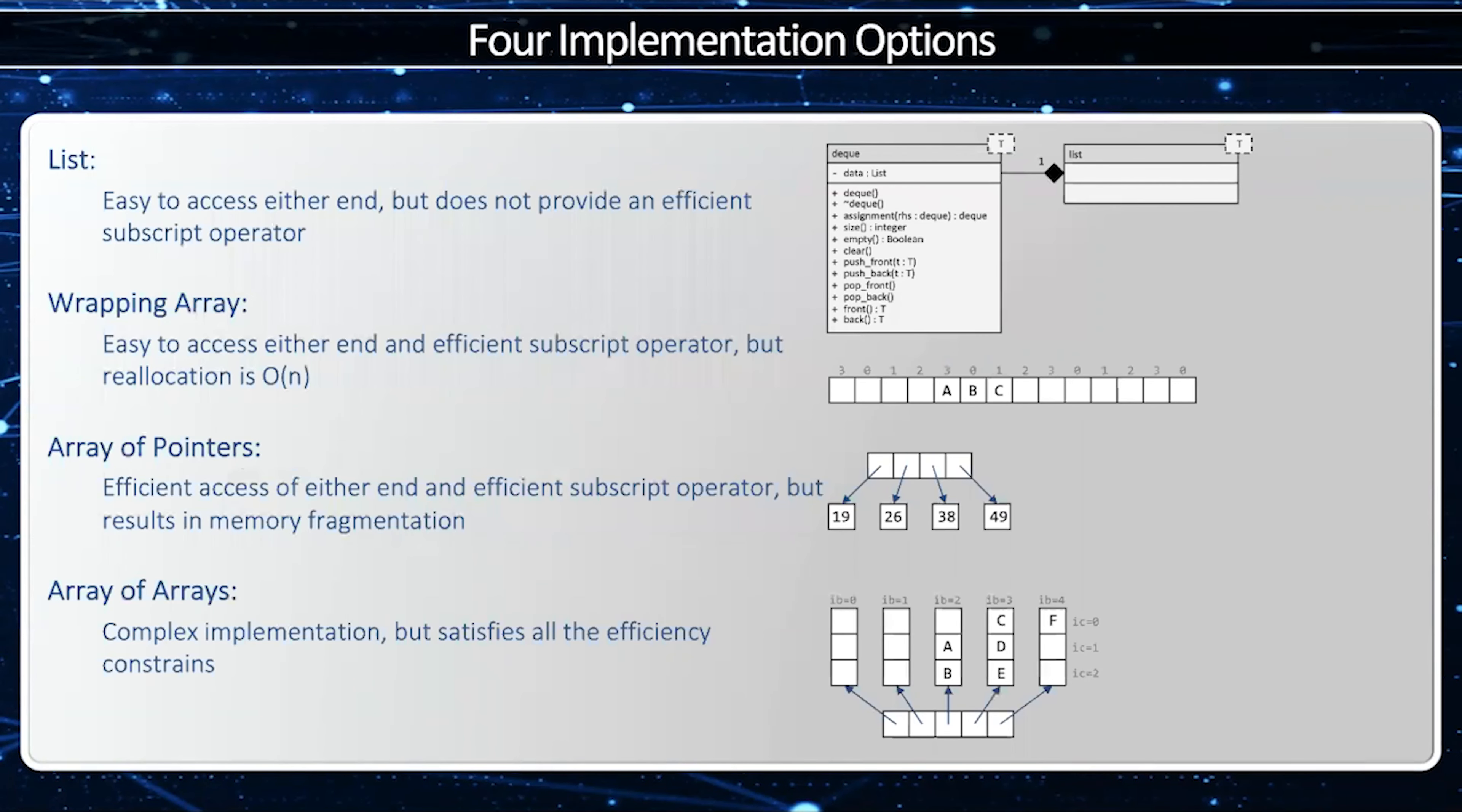Recall that there are four different implementations we can use for the deck. The first one is to use a list as an underlying data structure, which is great, but it does not allow for the square bracket operator. In other words, we cannot have random access.